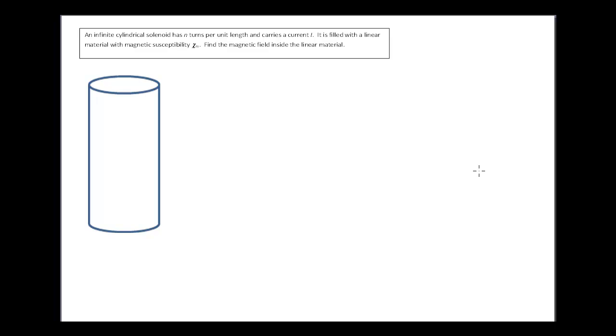So here's the problem. An infinite cylindrical solenoid has n turns per unit length, which tells you how tightly the wire is wound around the cylinder, and it carries a current I. So each turn of wire has the same current. It's filled with a linear material with magnetic susceptibility chi-sub-m. Find the magnetic field inside the linear material.